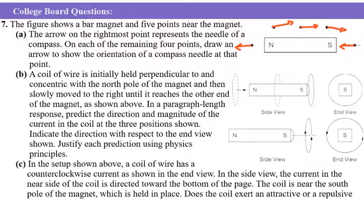For part B, they say a coil of wire is initially held perpendicular to and concentric with the north pole of the magnet, and then slowly moved to the right until it reaches the other end of the magnet as shown on your right. In the paragraph-length response, predict the direction and magnitude of the current in the coil at the three positions shown, and indicate the direction with respect to the end view shown.